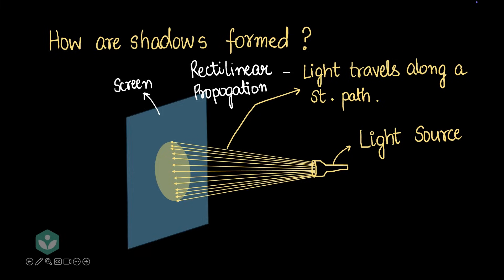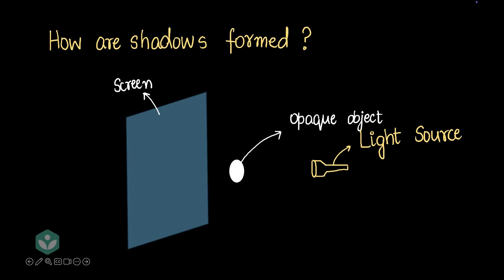But what if I brought some kind of opaque object between the torch and the screen? By opaque, I mean something that's not transparent, something that blocks light, that doesn't allow light to pass through. If I did that and then turn the torch on, what do you think would happen? Don't you think some of the rays would get blocked by the opaque object, leaving this kind of shape on the wall?